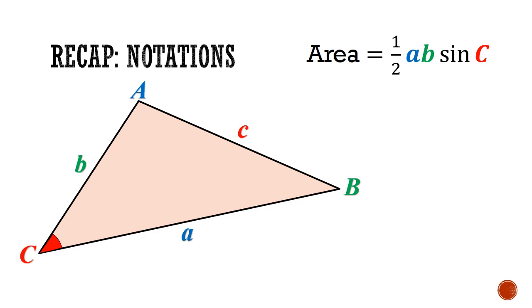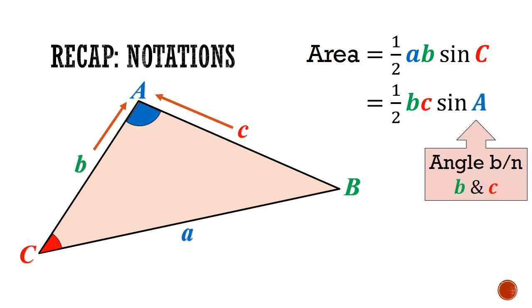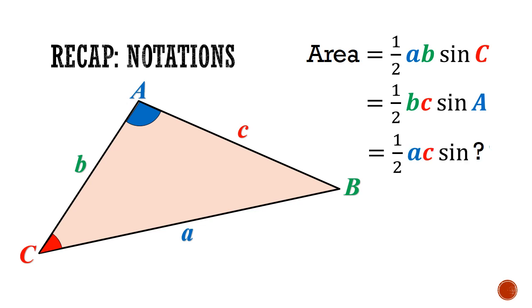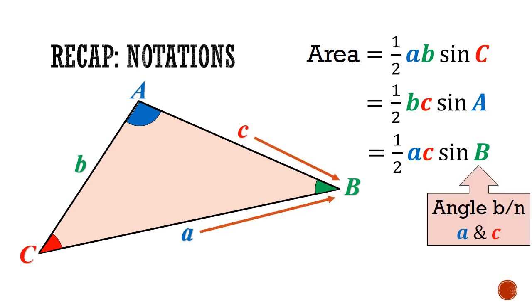However, I could have chosen different sides. I could have chosen side B and C. Then I would need to take sine of angle A, the angle between side B and side C. And for completeness sake, I could have chosen side A and side C. Then I would need to take sine of angle B, the angle between side A and side C.